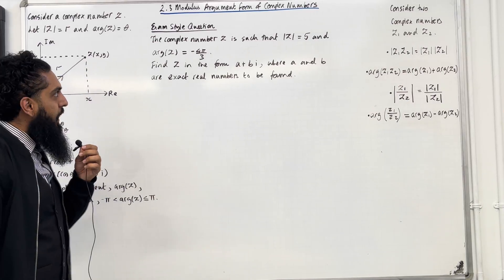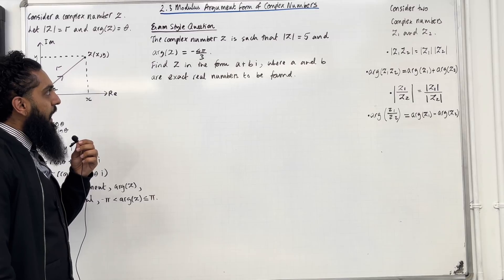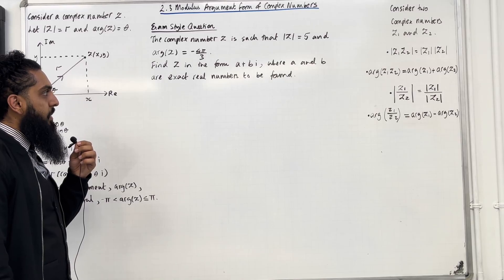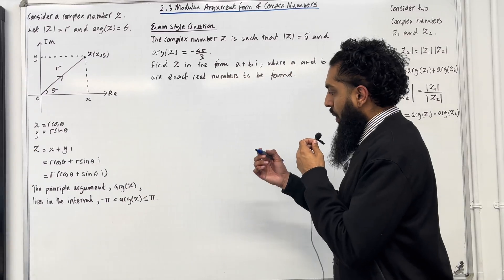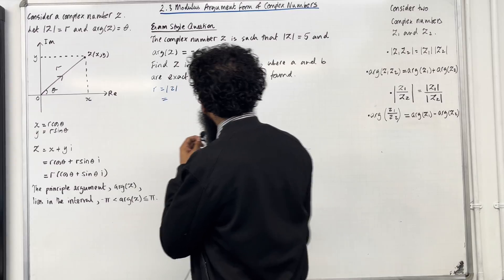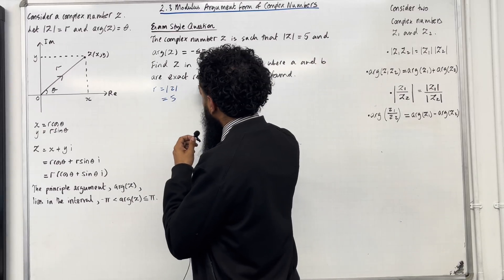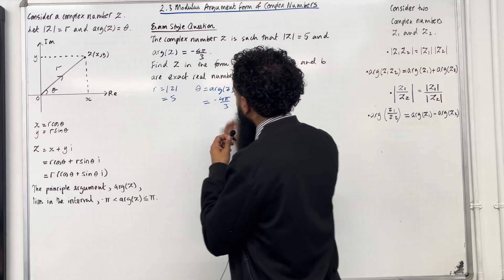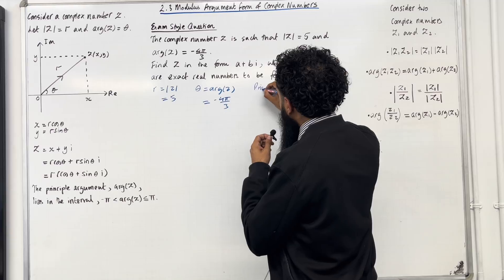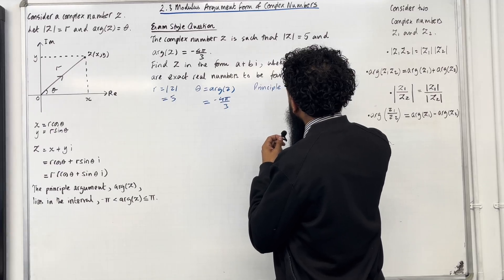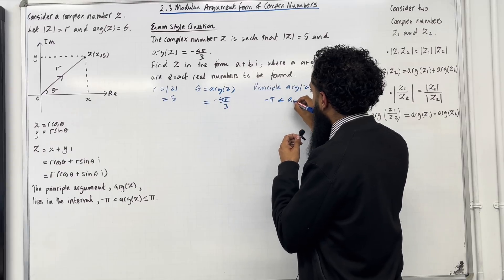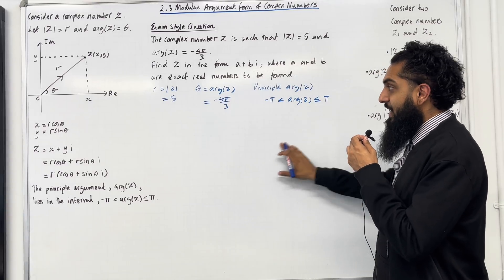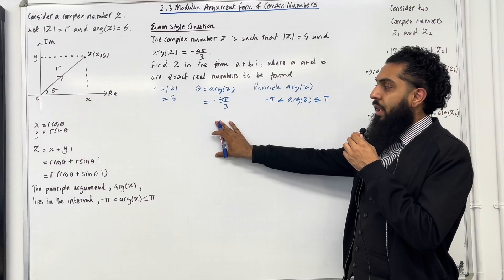Here is an exam-style question. The complex number z is such that |z| = 5 and arg z = −4π/3. Find z in the form a + bi where a and b are exact real numbers. So r = 5 and θ = −4π/3. Note that the principal argument satisfies −π < arg z ≤ π, so −4π/3 is not the principal argument — it is a second valid solution for the argument. Don't get confused; this second solution can exist.